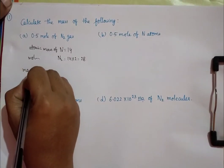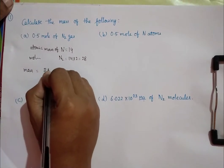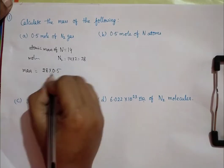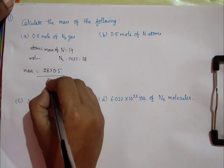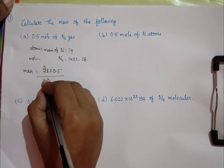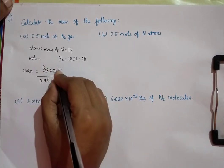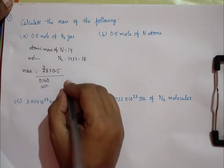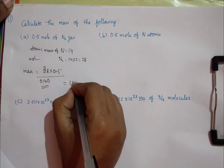So, we want to find out the mass. Mass is nothing but 28 into 0.5. That equals 14. This becomes here, nothing but the answer is 14 grams.